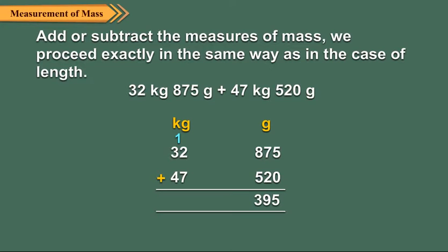This is equal to 1,000 gram plus 395 gram, which is equal to 1 kilogram and 395 grams. So, we write 395 under the gram column and carry over 1 to the kg column.